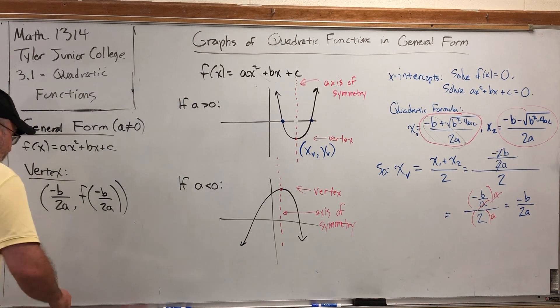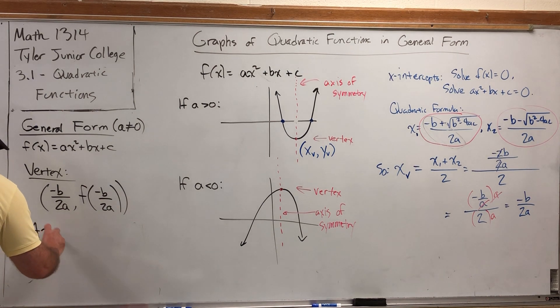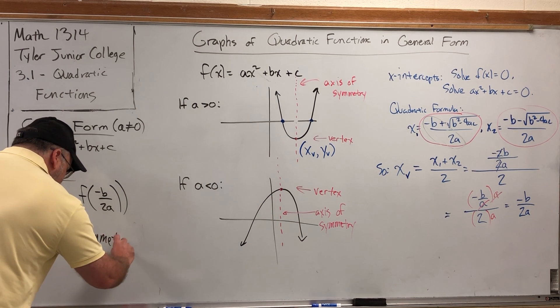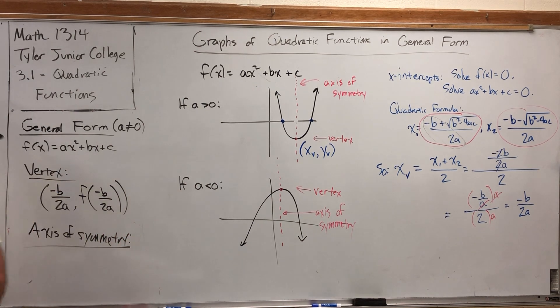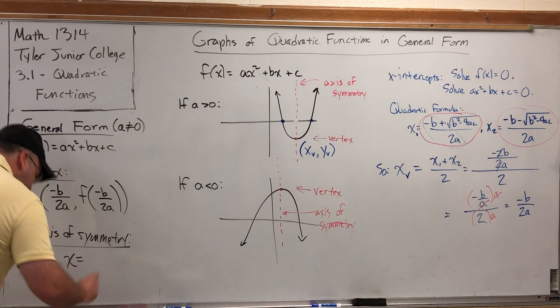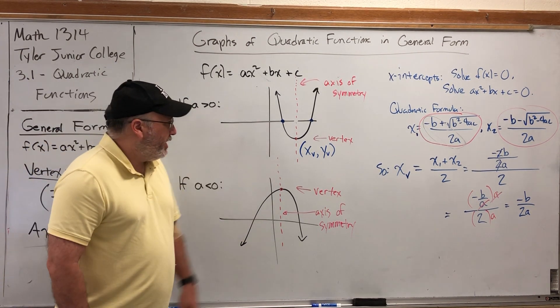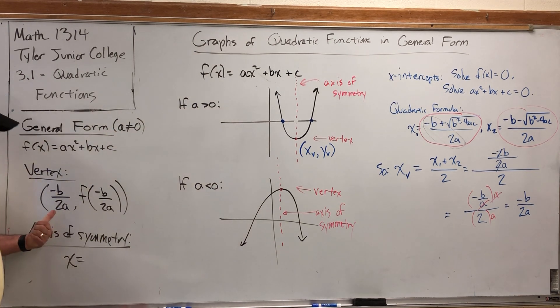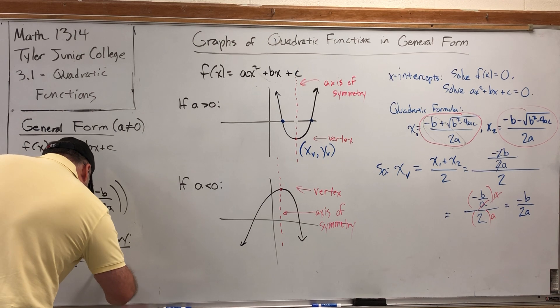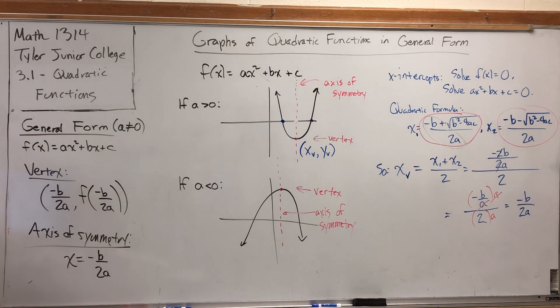Now that we have the vertex, we can write the equation of the axis of symmetry. After all, the axis of symmetry is a vertical line, so its equation is x equals... but it goes through the vertex, so it's x = -b/2a. Just like that, we have a formula that will tell us where the low or high point on any quadratic function in general form is.